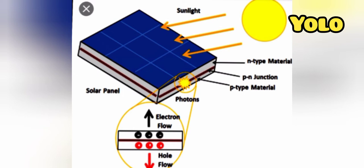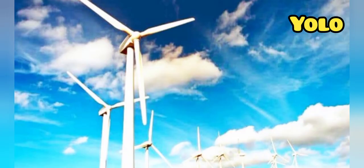A solar inverter converts the variable output of a photovoltaic solar panel into a utility-frequency alternating current that can be fed into a commercial electrical grid or used by a local off-grid electrical network. For windmills, the difference in air pressure across the two sides of the blade creates both lift and drag. The force of the lift is stronger than drag, and this causes the rotor to spin, which is connected to a generator creating electricity.